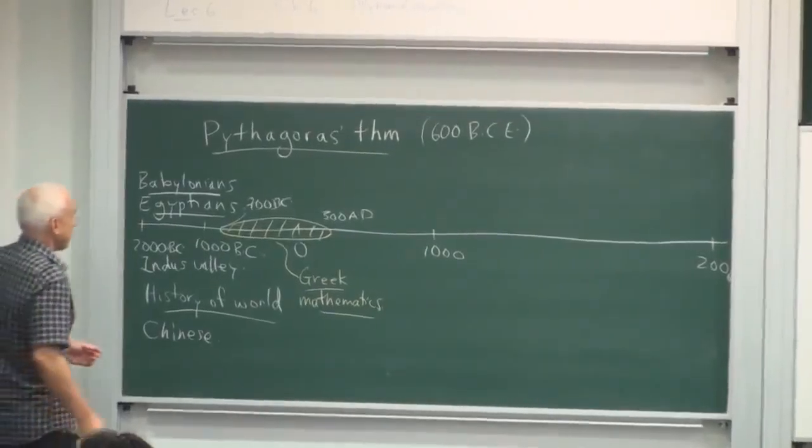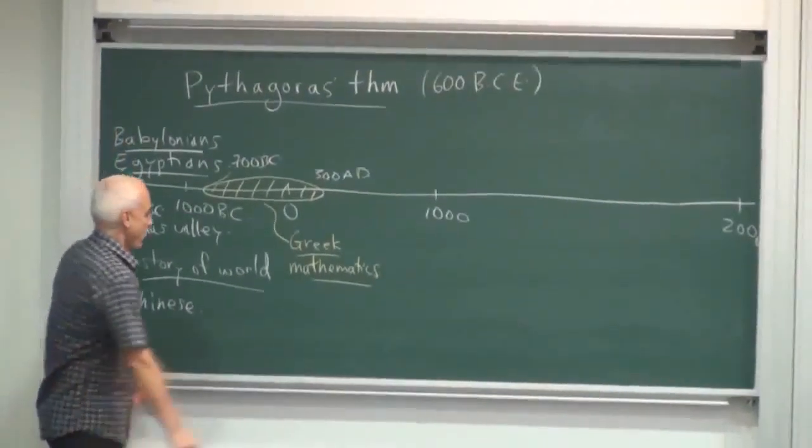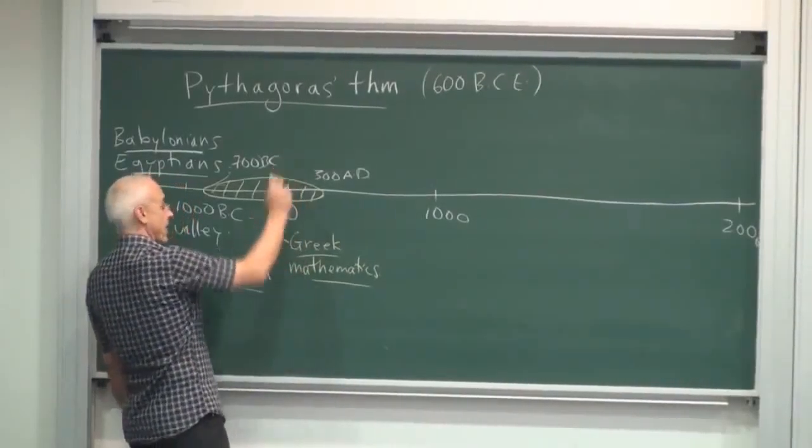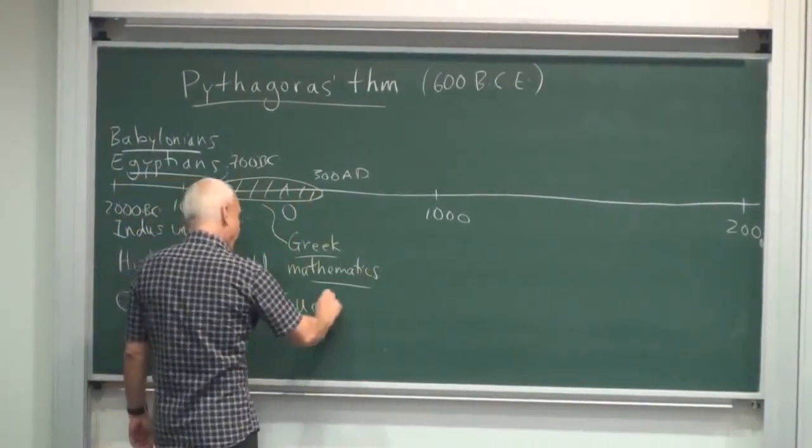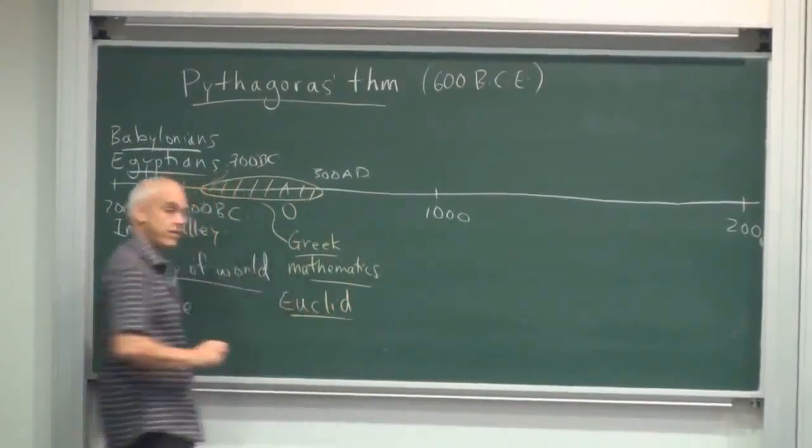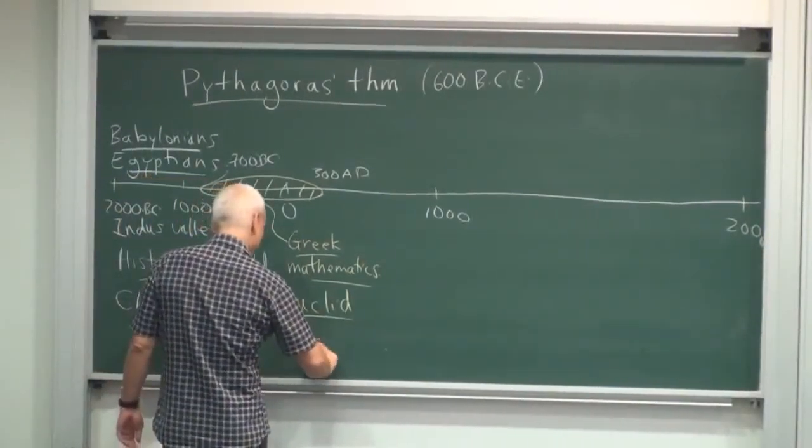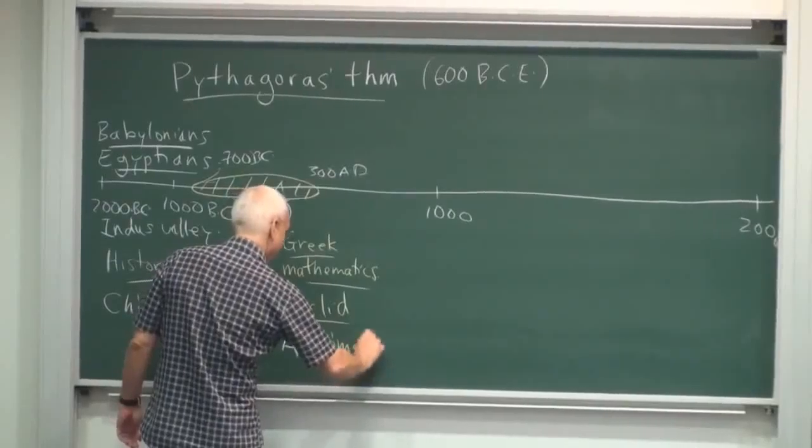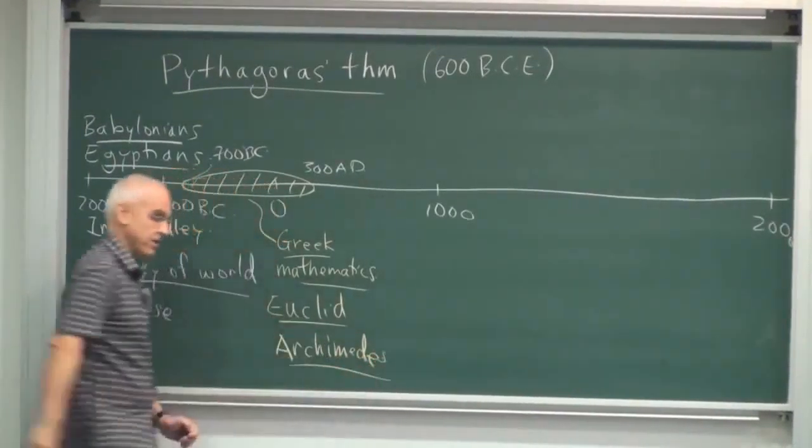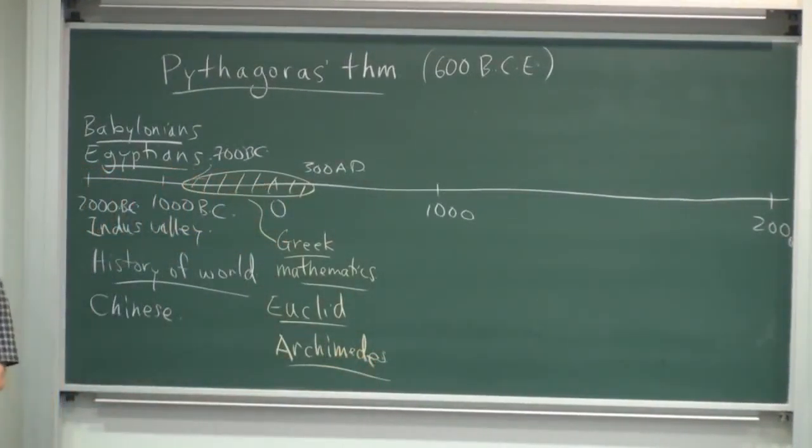And prominent amongst the Greek mathematicians were some very famous names. Well, Pythagoras was one, but probably more famous than Pythagoras was Euclid and Archimedes. I would say these are the two towering figures in ancient Greek mathematics. But there are many other important Greek mathematicians, too.